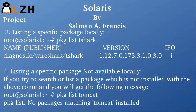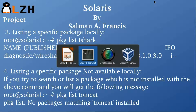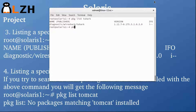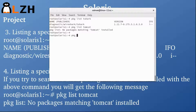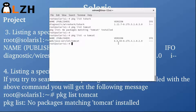Now for listing a specific package which is not available locally — in our case it's going to be tomcat. If I run 'pkg list tomcat', you can see it says 'no package matching tomcat installed'. To list a package not available locally, you use 'pkg list -a tomcat'. It searches for the package and you can see it's part of Java Servlet, in the web group, version 6.02 — available but not locally installed.